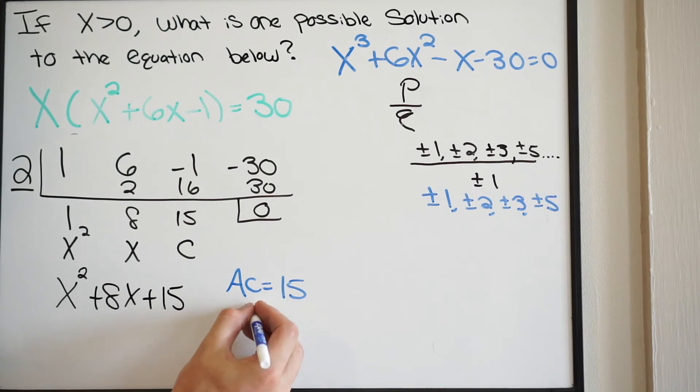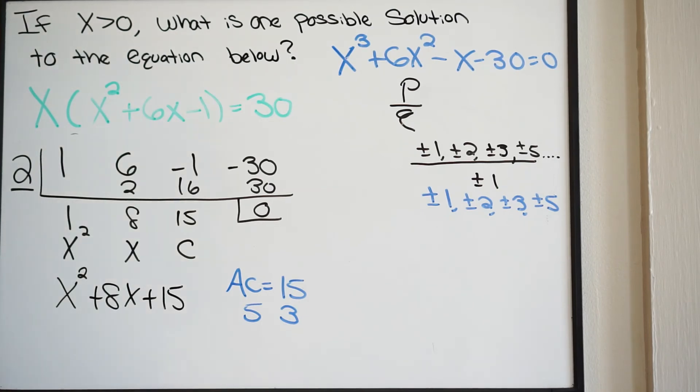We need two numbers that when we multiply are going to give us 15 but add up to 8. Well, that's going to be 5 and 3. And notice that a is equal to 1 here. So we don't have to do factoring by grouping. We can put this right into factored form. We're going to have x plus 5, then x plus 3.